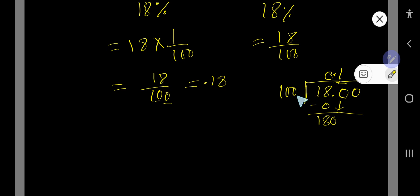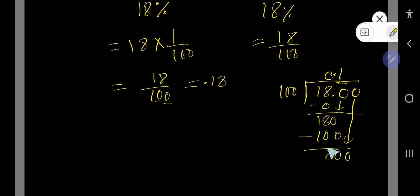1 times 100 is 100. If you subtract, then you are getting 80. Bring down the second 0: 800. 100 goes into 800 eight times. 8 times 100 is 800. If you subtract, then 0. That is 0.18.